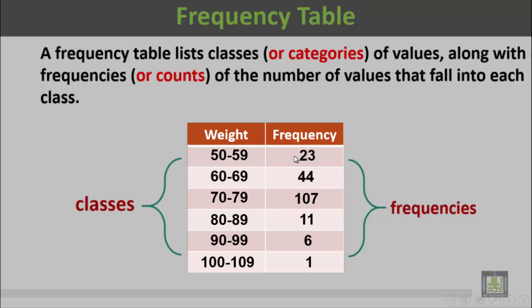The second class is those who have weight of 60 to 69 kg, and their frequency is 44.